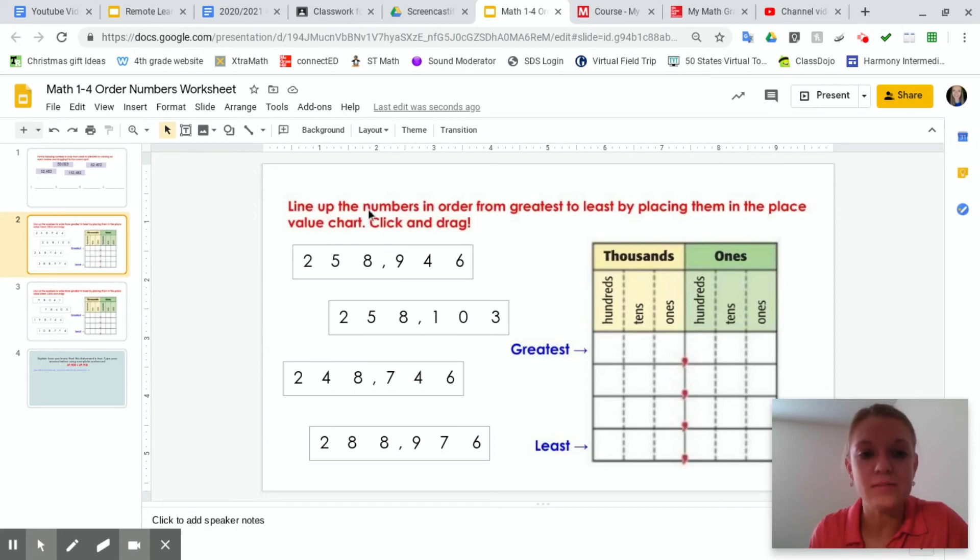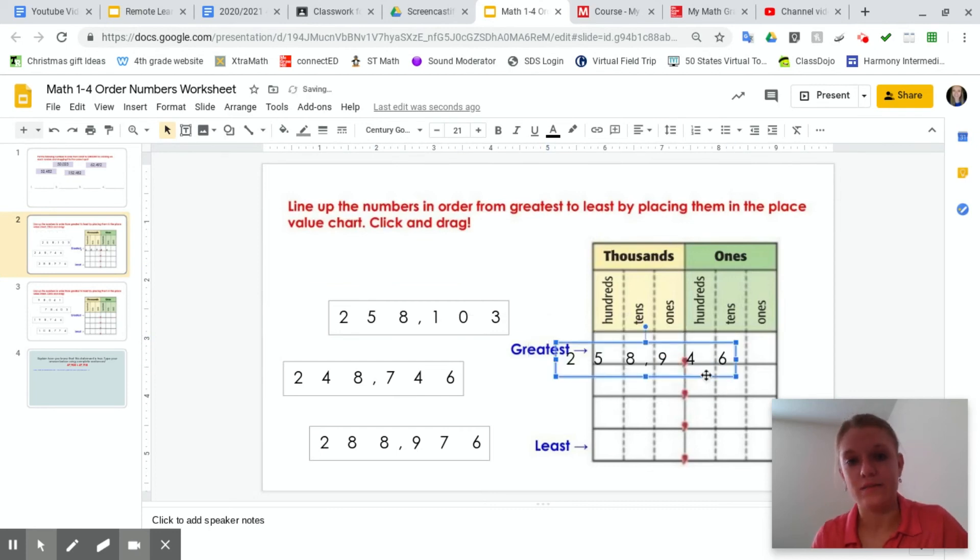Okay, it says line up the numbers in order from greatest to least. Greatest to least. Biggest to smallest, right? By placing them in the place value chart, click and drag. Okay, so click. Ooh, now if I put it like this, that ain't right. That just isn't right. Okay, make sure that it lines up in the place of it. Ooh, look how pretty it is. If it's pretty, I'll accept it. Okay? You guys can click and drag just fine.